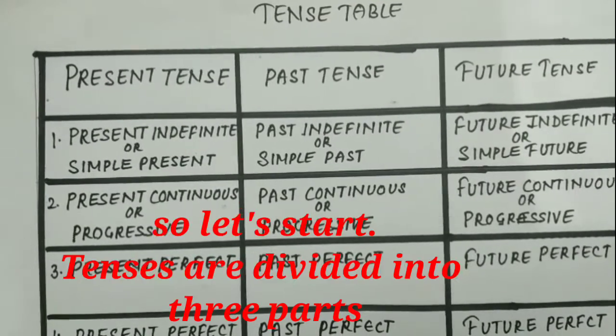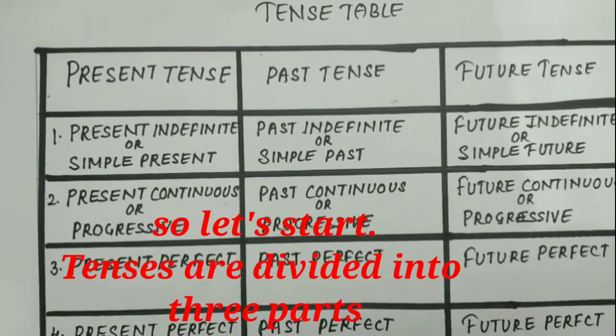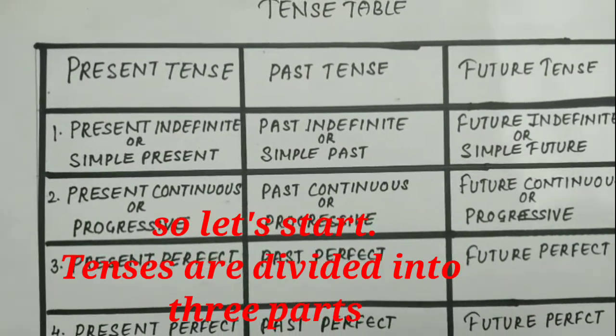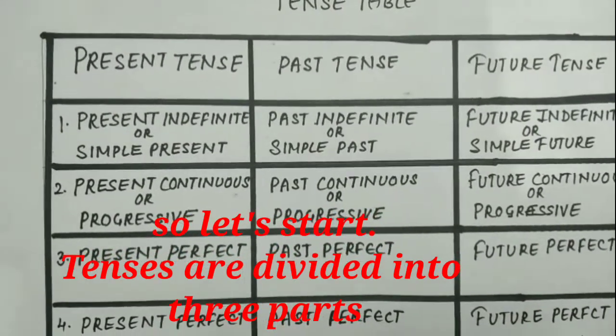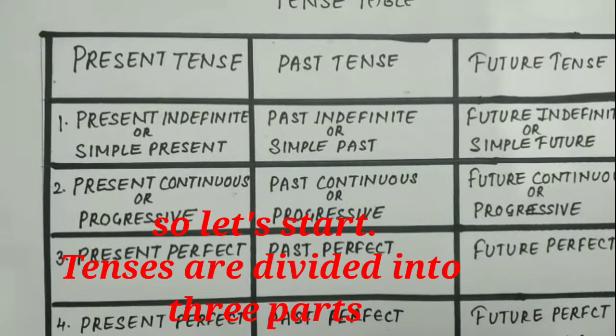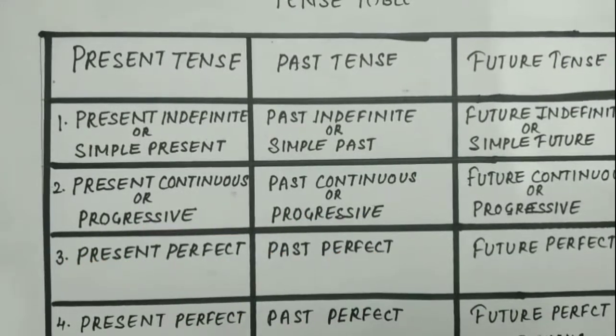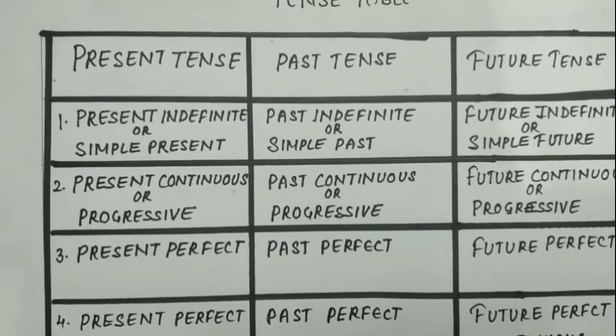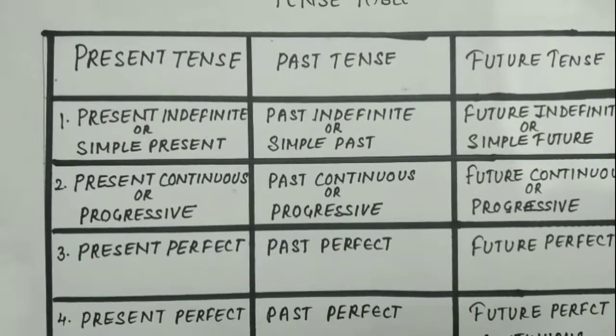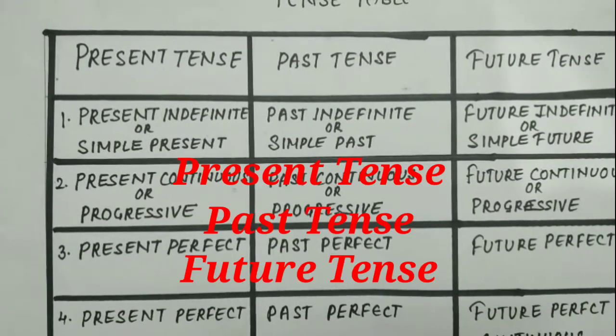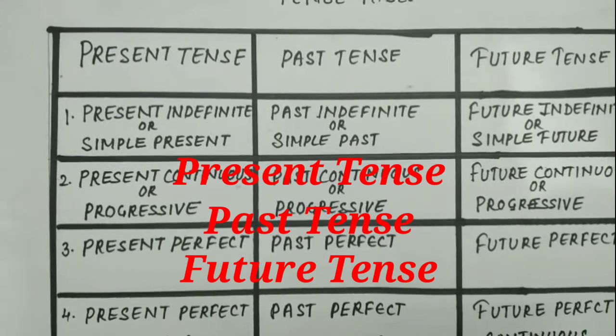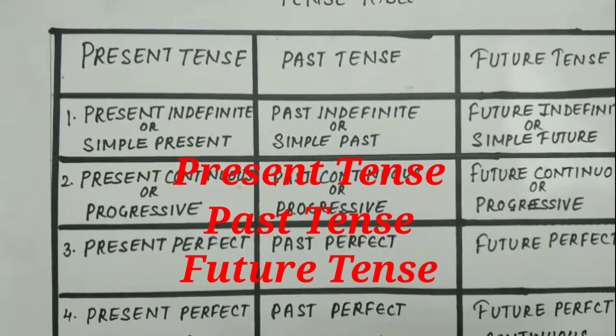So let's start. Tenses kitni tarhe ke hotte hain? Tenses teen tarhe ke hotte hain — tenses, past tense, and future tense. Present tense.